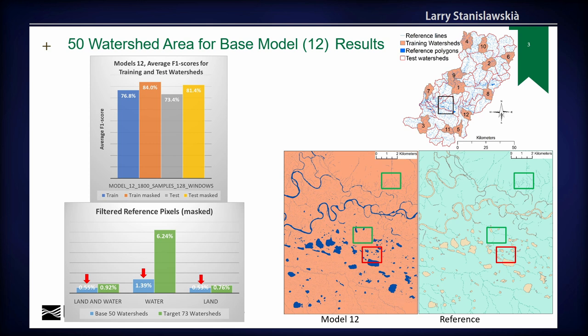Filtering included about half a percent of the pixels and about 1.4% of the water pixels. By setting the filtered pixels to null and recomputing masked F1 scores, those scores increased by 7 to 8%. You can see the predictions on the lower right — they work well for the water body features, the larger features, but the detailed network features are not well connected and not well predicted. The reference data is on the right-hand side.